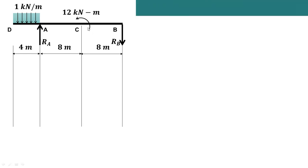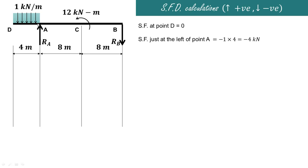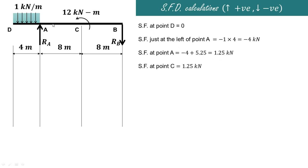Using the values of RA and RB, we find shear force values at various points to draw the shear force diagram. At point D the shear force is 0. Just to the left of point A, considering only the UDL: 1 into 4 downward gives minus 4. Exactly at point A, adding the upward reaction RA of 5.25 gives minus 4 plus 5.25 equals 1.25 kilonewtons. There is no load between A and C, so shear force at C remains 1.25 kilonewtons.